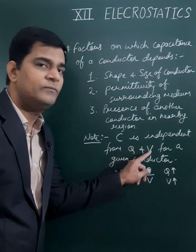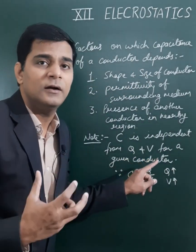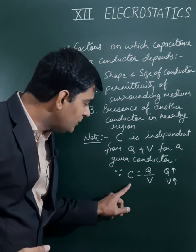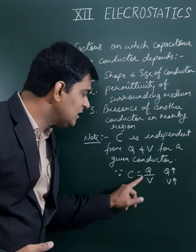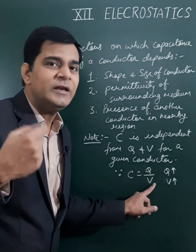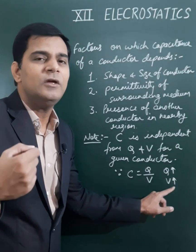The factors on which capacitance is independent are Q and V, for a given conductor. From the expression C = Q/V, if we increase Q then V also increases proportionally, so C remains unchanged.